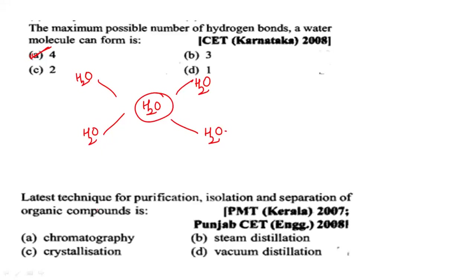Next question: the latest technique for the purification, isolation, and separation of organic compounds is — chromatography, steam distillation, crystallization, or vacuum distillation? Option A — chromatography — is correct. This technique can perform all three functions (purification, isolation, separation) together in one place, making it the most modern method.